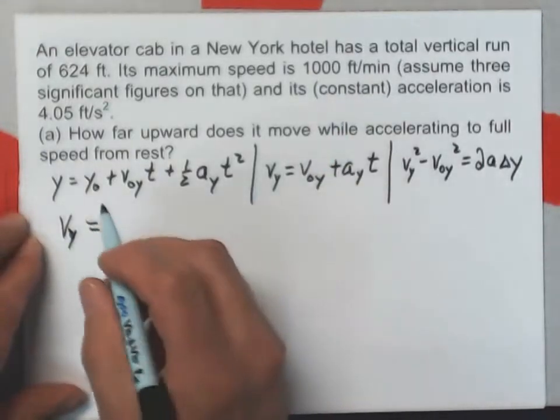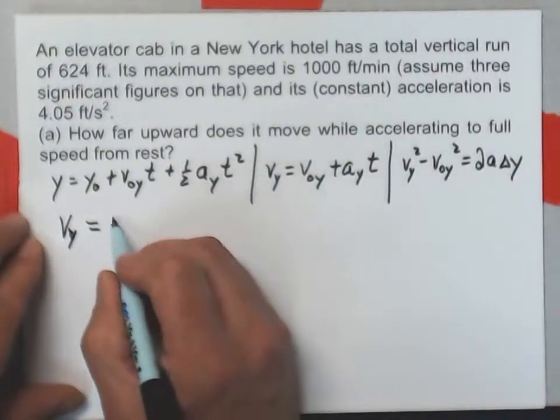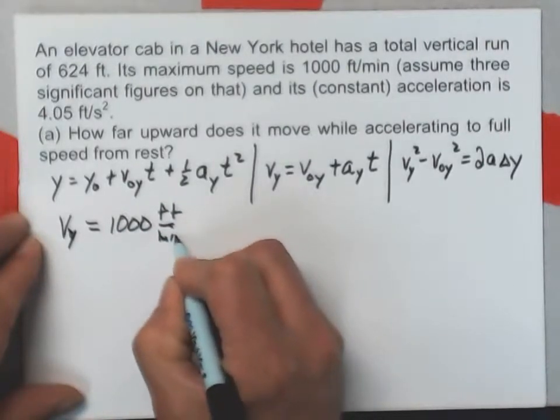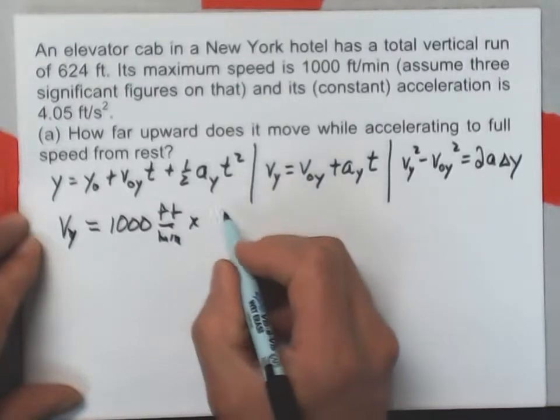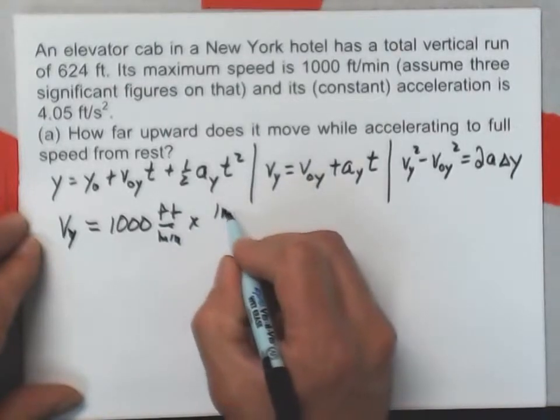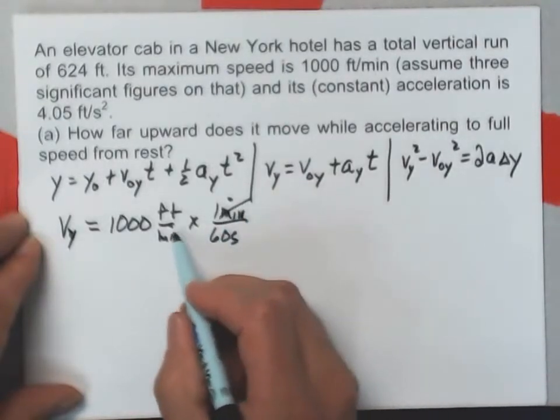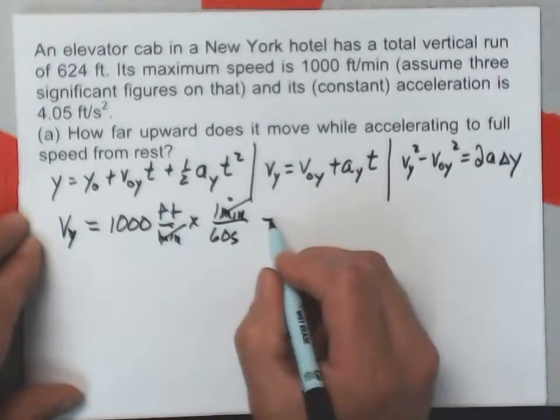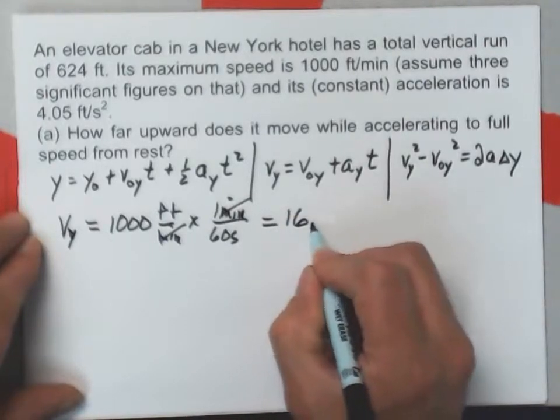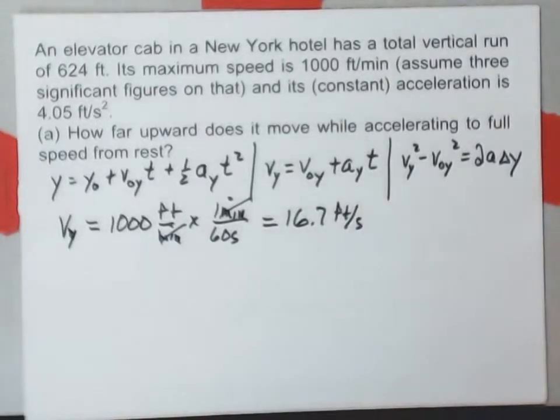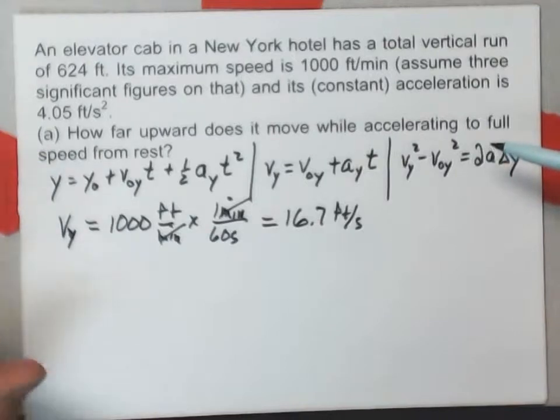So v sub y, this is actually the maximum velocity in the y direction, is 1000 feet per minute. If I multiply that by 1 minute over 60 seconds, the minutes will divide out and I'll end up with feet per second. And that turns out to be 16.7 feet per second.